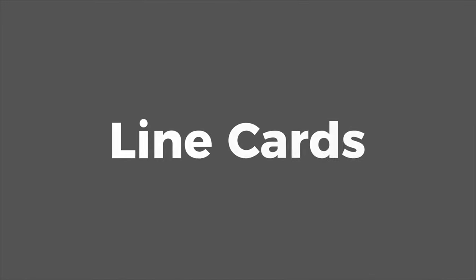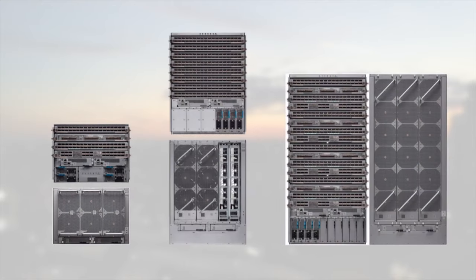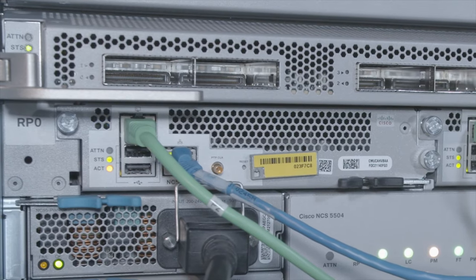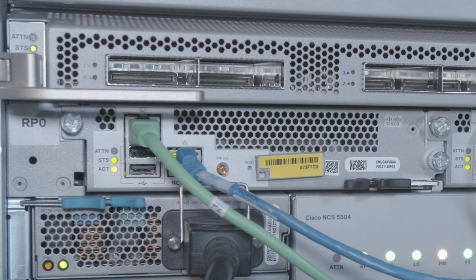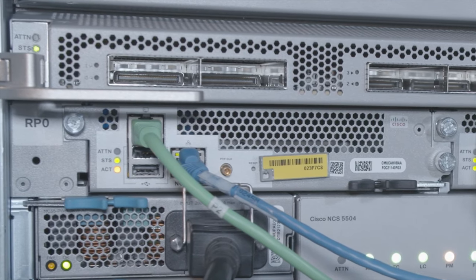For the chassis and line cards, we offer 4-slot, 8-slot, and 16-slot chassis. In the front, the route processors — we have 2 generations: RP and RPE. The RPE is mandatory to enable timing features and consumes slightly less power; otherwise they are pretty similar. We don't support a mix of RP and RPE. It is not advised to use only one RP; to guarantee process redundancy, NSF, and NSR features, you need one active and one standby RP.